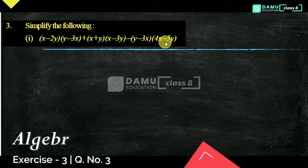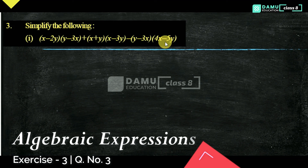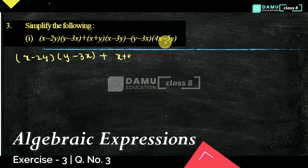So in this module, we are going to discuss: simplify the following, that is x minus 2y into y minus 3x plus x plus y into x minus 3y minus of y minus 3x.